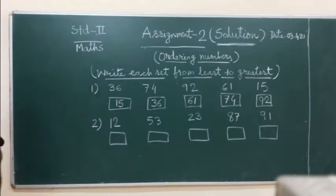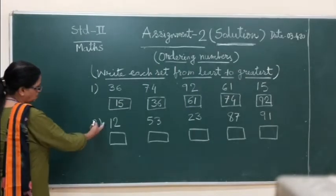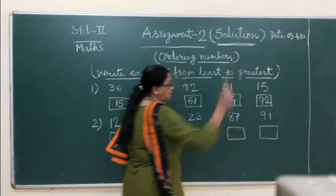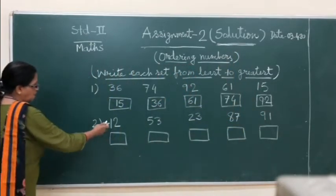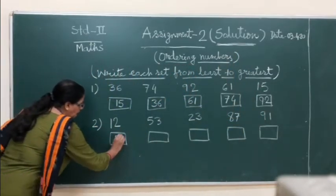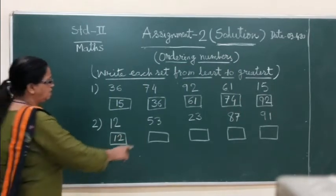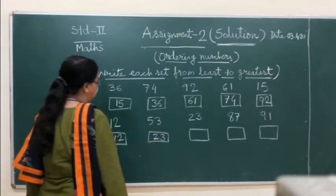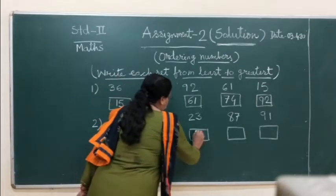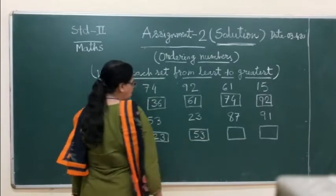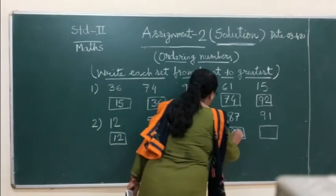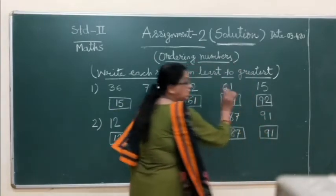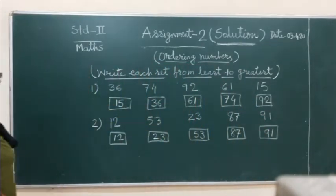Second one, we will see. Which one is? First one 12, 53, 23, 87, 91. Okay, smallest is here only 12, then 23, then 53, then 87, then 91 is the greatest.